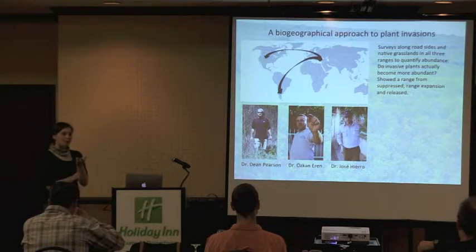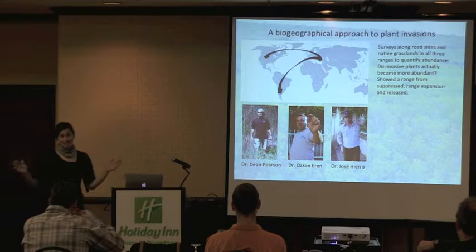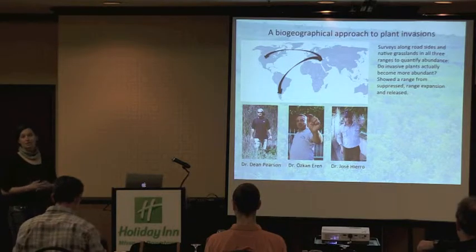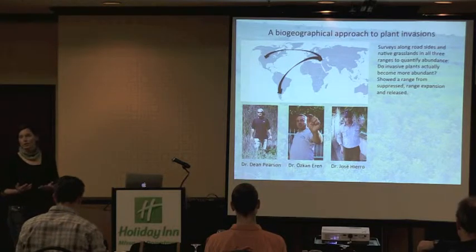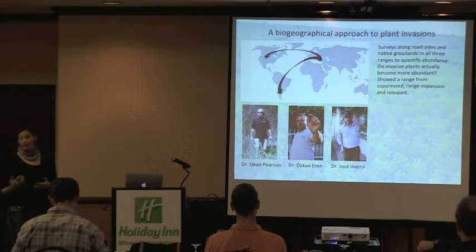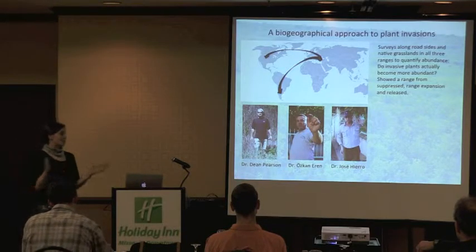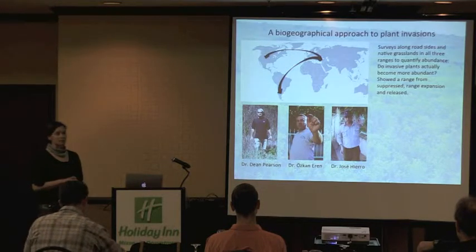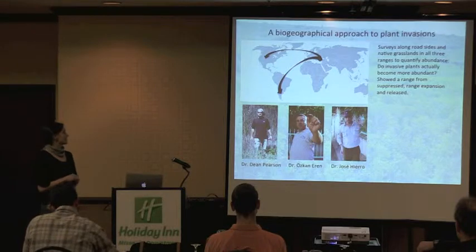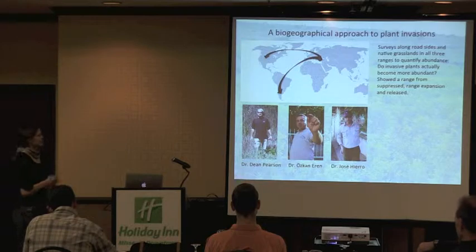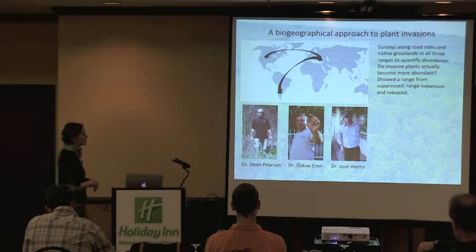Perhaps not surprisingly, among these 30 plants, some came to Argentina and Montana and became suppressed — lower abundance here than in Turkey. Another set simply underwent range expansion at about the same abundance. And then there are the problem invaders that just explode in abundance when they arrive. Montana and Argentina were chosen because their native grasslands are very similar — bunch grass-dominated in both places.